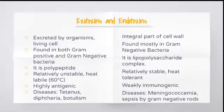Exotoxins are present in both gram-positive and gram-negative bacteria whereas endotoxins are mostly present in gram-negative bacteria. Exotoxins are polypeptides, relatively unstable and heat labile, whereas endotoxins are relatively stable and heat tolerant. Exotoxins are highly antigenic whereas endotoxins are weakly immunogenic.